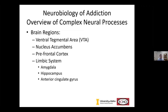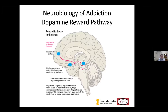The brain regions most involved in addiction include: the ventral tegmental area, the nucleus accumbens — which is the reward center — the prefrontal cortex, which handles thinking and executive function, and the limbic system, particularly the amygdala, hippocampus, and anterior cingulate gyrus.